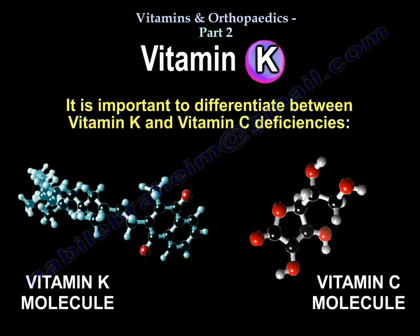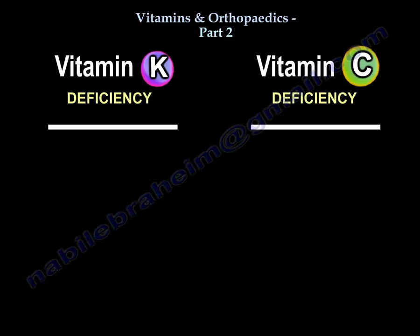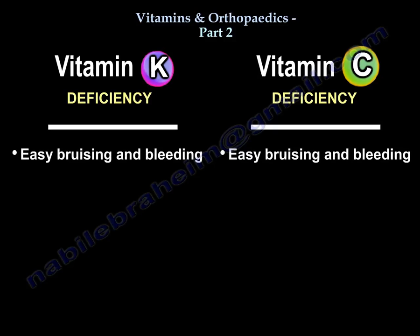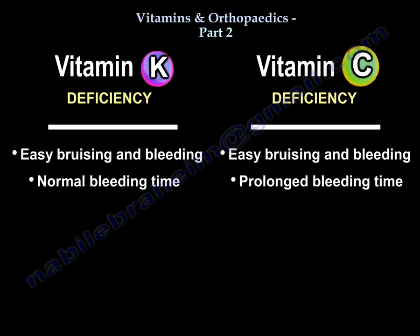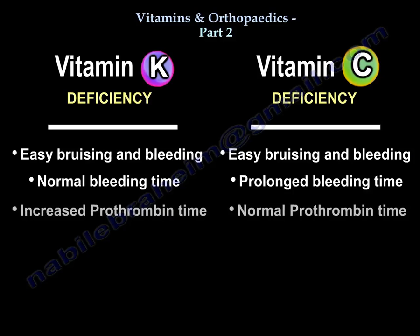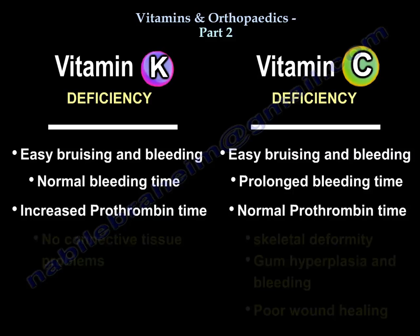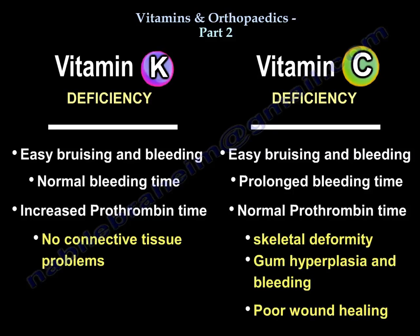It is important to differentiate between vitamin K and vitamin C deficiencies. Both lead to easy bruising and bleeding. Bleeding time will be normal in patients with vitamin K deficiency, but will be prolonged in patients with vitamin C deficiency. Prothrombin time, on the other hand, will be increased in vitamin K deficiency but will be normal in vitamin C deficiency. Vitamin K deficient patients do not have connective tissue problems, while vitamin C deficient patients demonstrate skeletal deformities, gum hyperplasia and bleeding, and poor wound healing.